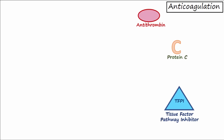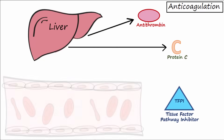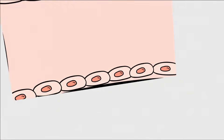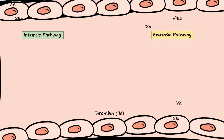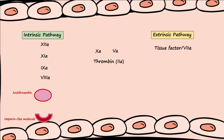Three important naturally occurring anticoagulants include antithrombin and protein C, both made by the liver, and tissue factor pathway inhibitor, or TFPI, made by the endothelial cells that line blood vessels. The naturally occurring anticoagulants inactivate several clotting factors.